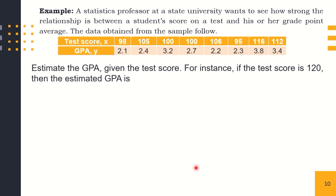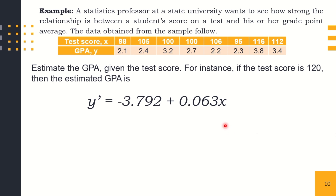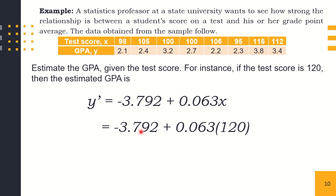Let's apply the equation. If the test score is 120, what will be the estimated GPA? Using the regression equation, substitute x = 120: y' = −3.792 + 0.063 times 120, which equals 3.768, or approximately 3.8. So the estimated GPA if the test score is 120 is 3.8.